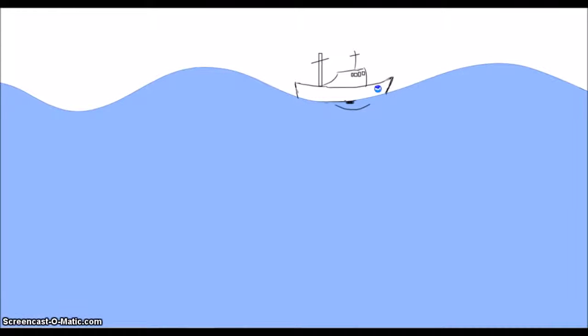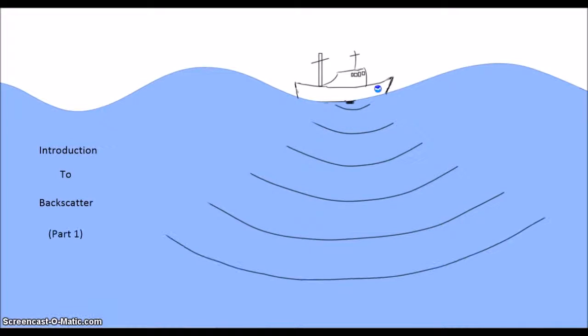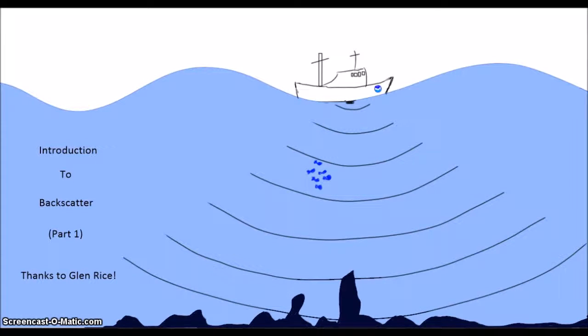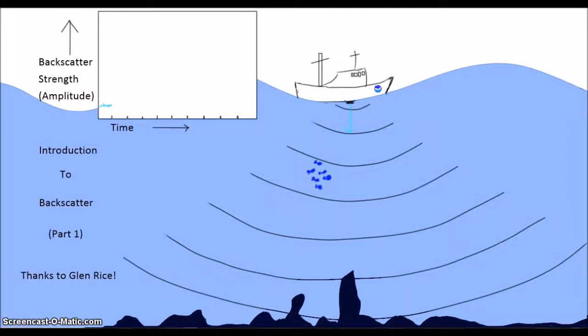Our acoustic instruments transmit a pulse of acoustic energy and then listen for any returning energy that is scattered back to the receiver after having been bounced off of any objects that are out there, such as schools of fish or the sea floor itself. The returned acoustic energy is called backscatter, or the energy we transmitted that was then scattered back to us.